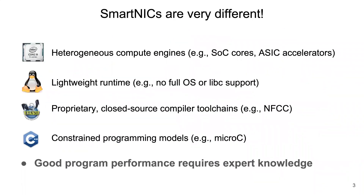However, offloading a NF running on host servers into SmartNIC platforms is no easy task. This is because of the vast difference between traditional host servers and SmartNICs in many aspects. On the hardware architecture level, host servers come with general-purpose x86 cores and a familiar cache-coherent memory hierarchy, while SmartNICs have specialized compute units with customized hardware accelerators and memory regions. On the runtime and compiler level, host servers come with familiar environments such as Linux OS and LLVM compiler, while SmartNICs have limited or even no operating system support and rely on customized compiler toolchains.